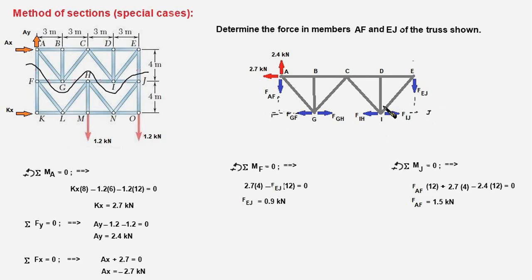And similarly when we take moment of all the forces about point J the moment of all the horizontal forces plus this force would be 0, and our moment equation will have a single unknown F AF which is the internal force in member AF.